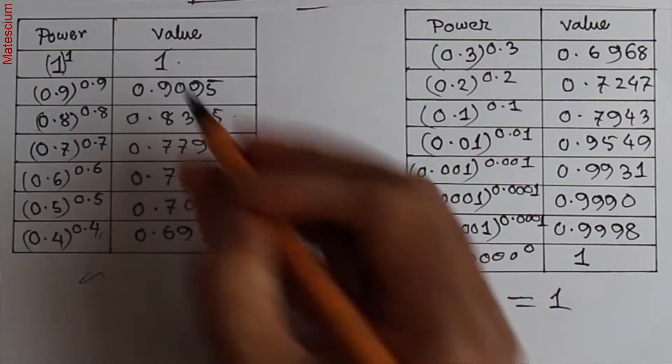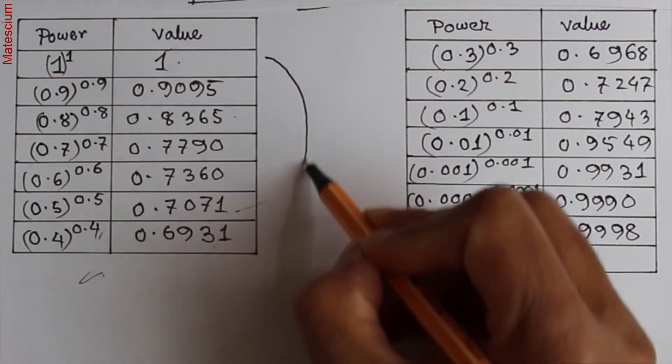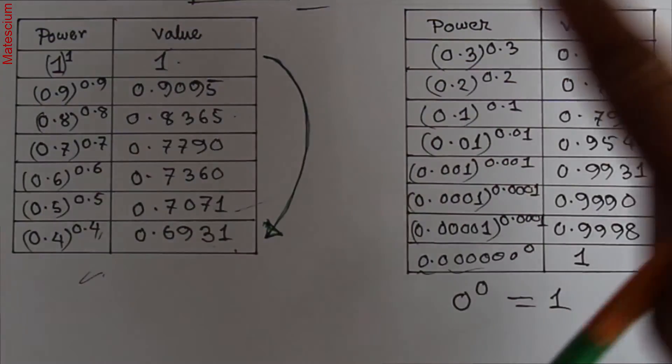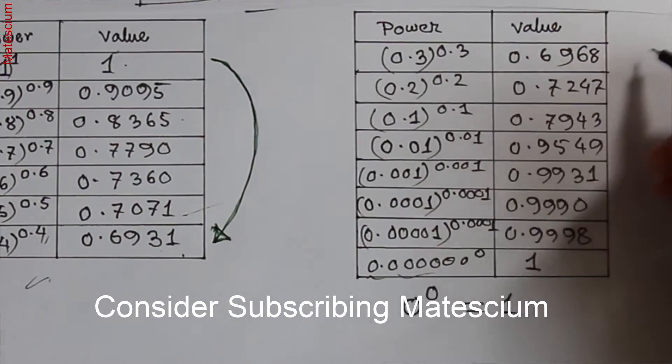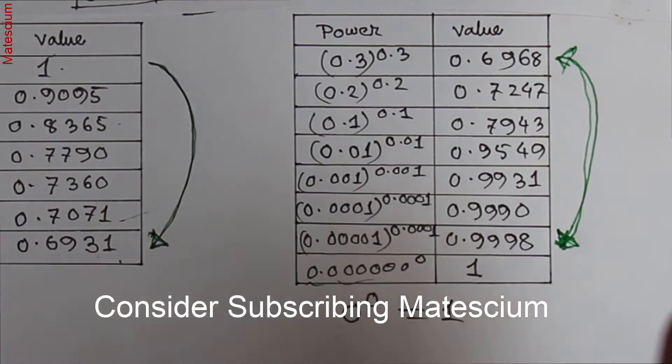Interestingly, look at here from this point to that point, the number is gradually decreasing from here to here. But for this part, the power value is increasing from this point to that point. So what exactly happened here?